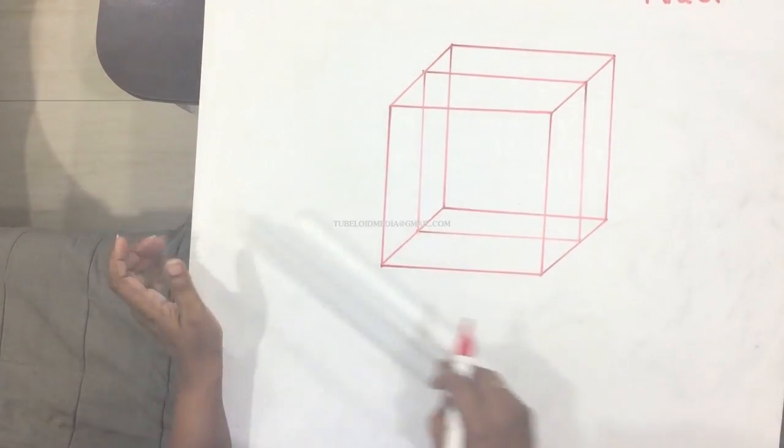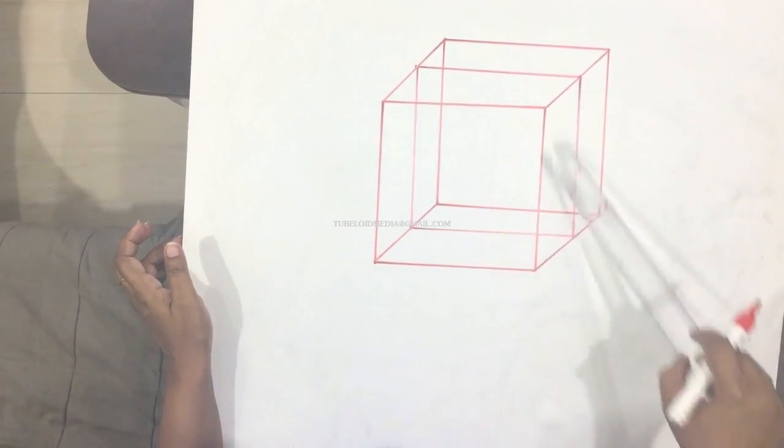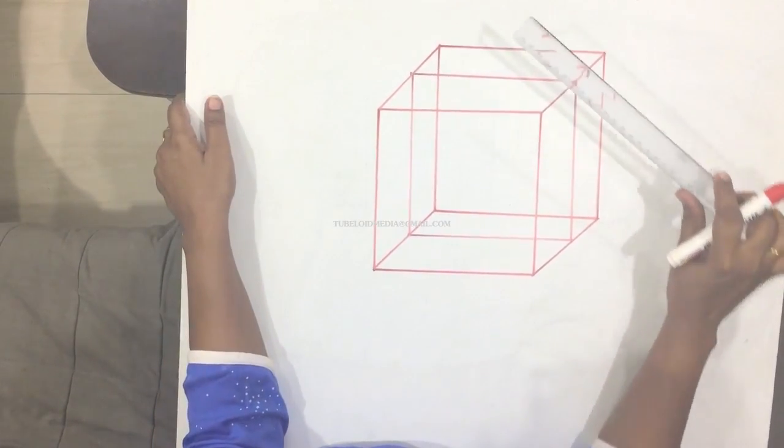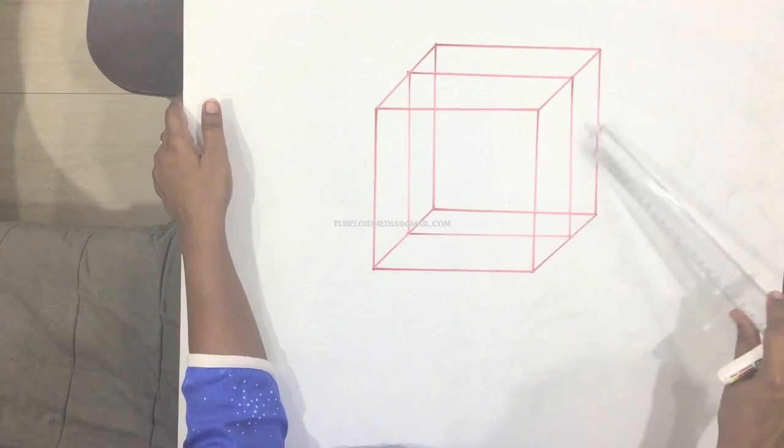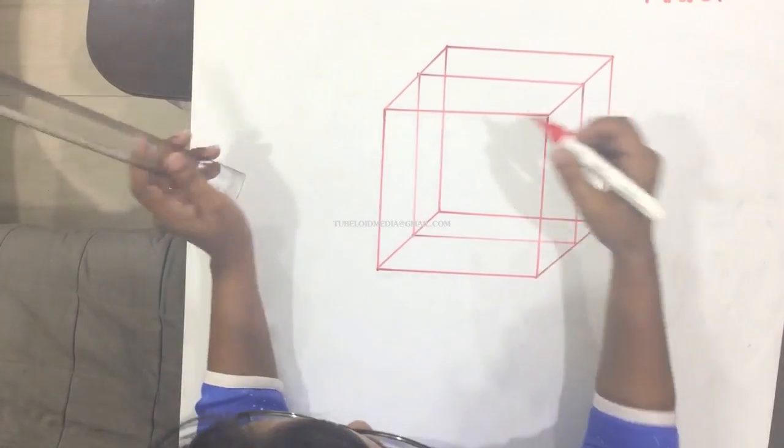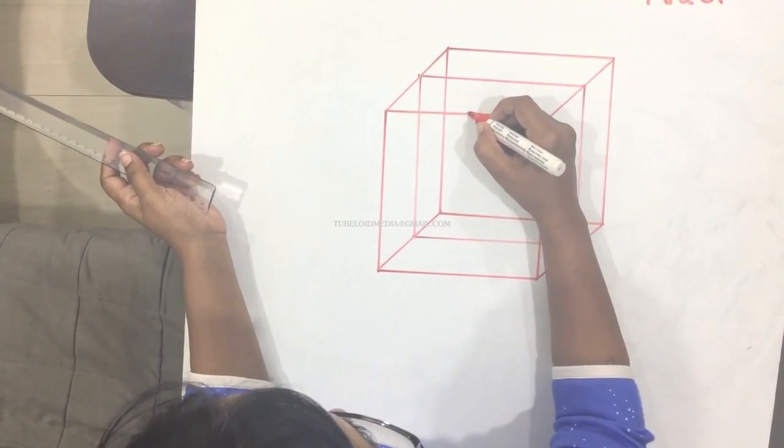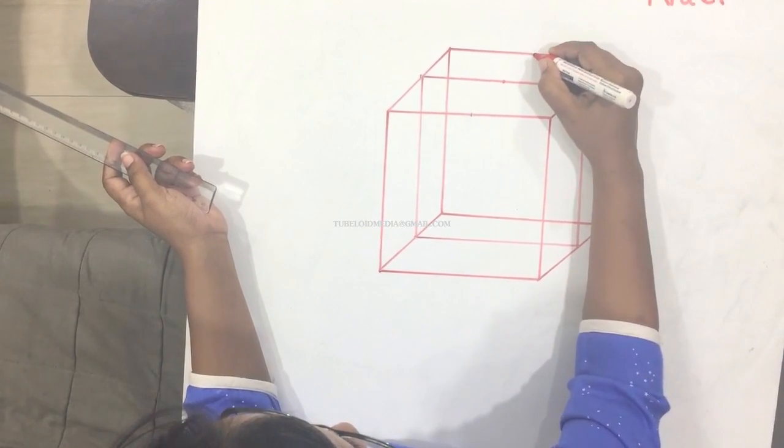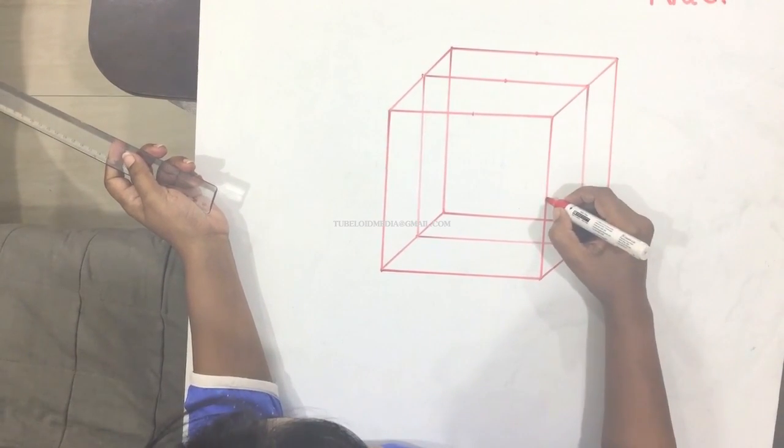Now you can see I have three squares here. One, two and three. Now, I am going to mark the center points for these, all these lines now. So this will be here, here and here. And for this here.